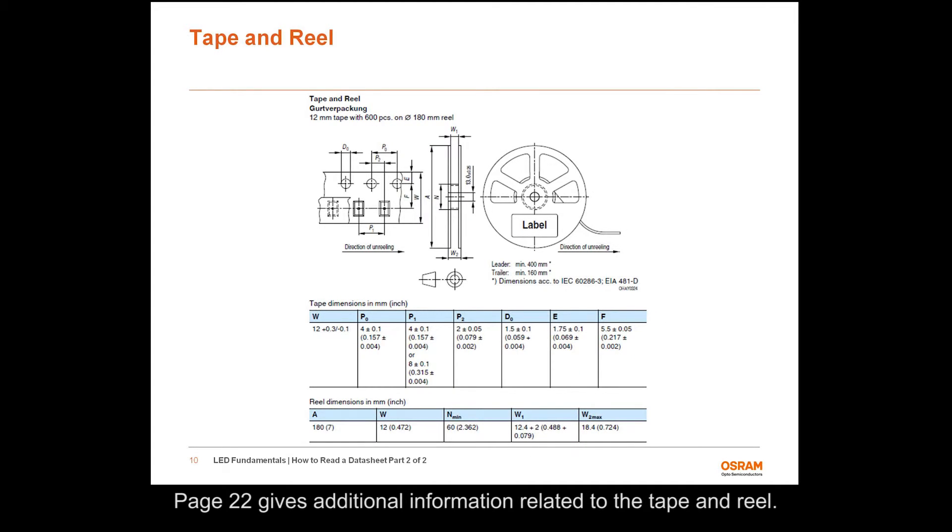Page 22 gives additional information related to the tape and reel. SMT components are packaged properly to ensure perfect and economical processing. Osram Opto Semiconductors offers packaging in 8, 12, 16, or 24 mm standard tapes. The leads are galvanic tin plated with pure tin for RoHS compliant devices, which ensures good solderability even after 2 years storage time.